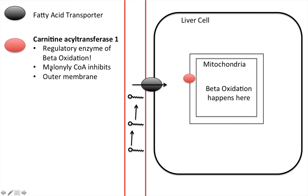Carnitine will come up in test questions on beta oxidation — it's something they like to test on, so you definitely have to know about carnitine. In this diagram, the little red line is the blood, with a fatty acid moving through it. Here we have a liver cell and a mitochondria. The black circle is called the fatty acid transporter — that's how the fatty acid gets from the blood into the liver cell. On the membrane of the mitochondria, you have carnitine acyltransferase 1, which you definitely need to know — it's a really important regulatory enzyme of beta oxidation.